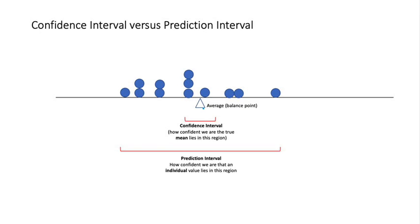A confidence interval will tell me how confident we are that the true mean of that population lies in a certain region. For example, I calculate the average, which gives me an estimate of the population mean. But it will also say that the true population mean could lie between these two numbers.